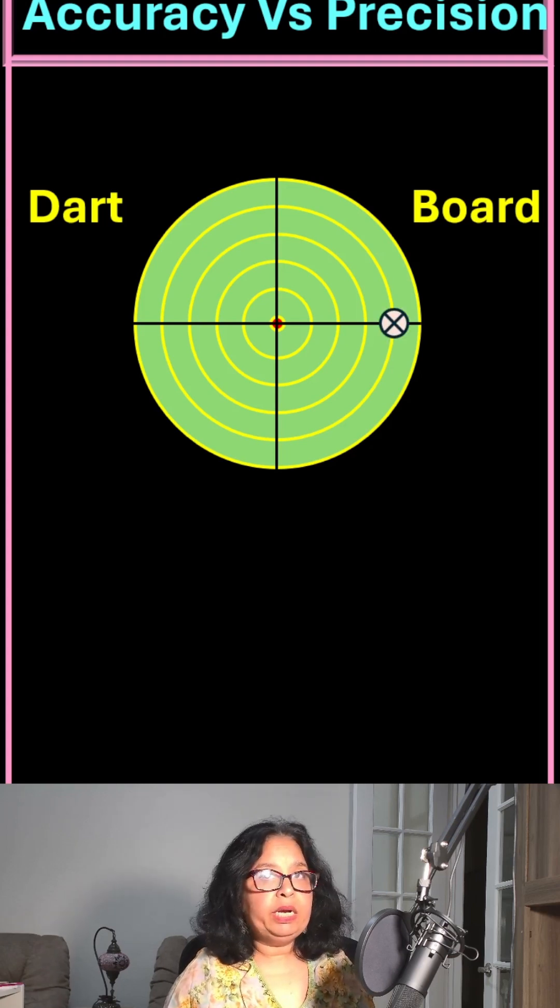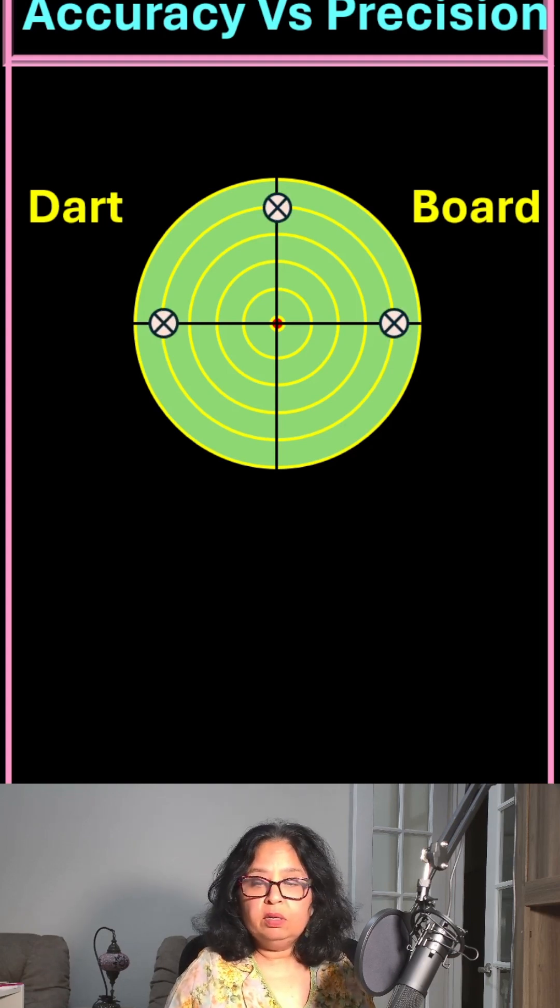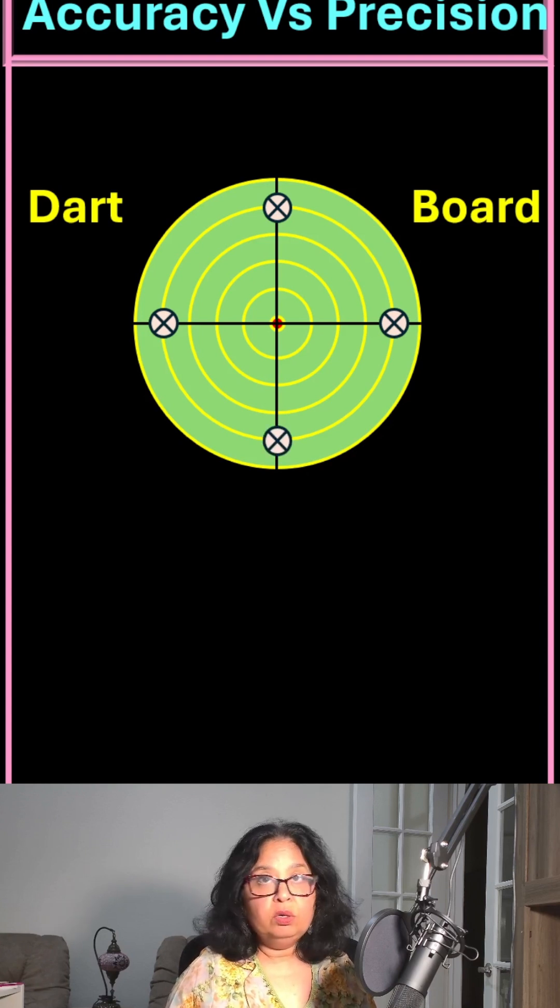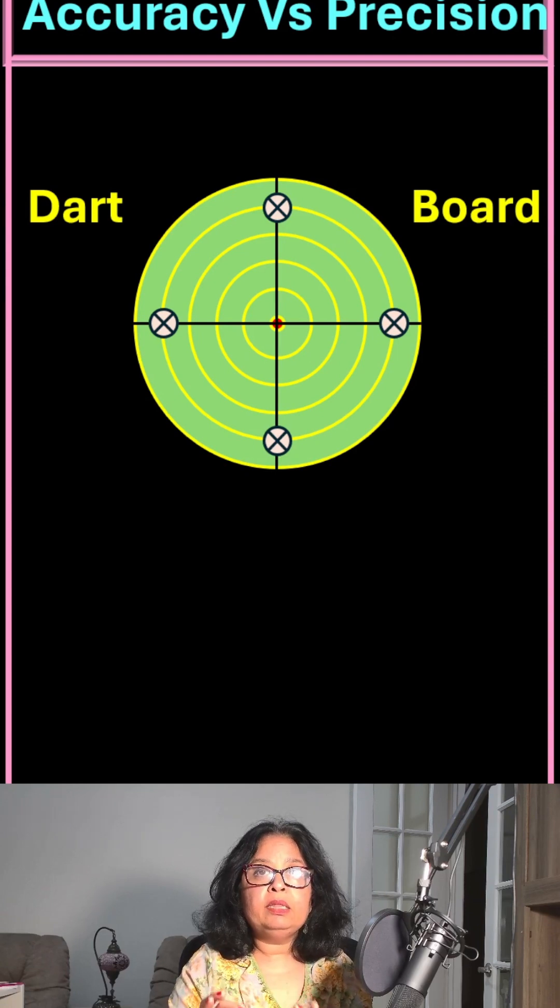This is where my first dart lands. Here's my second dart, third dart, and the fourth dart. So you can see that none of the darts that I threw landed at the target.